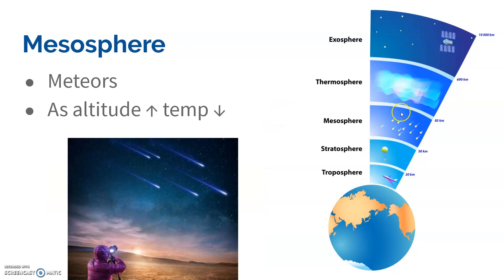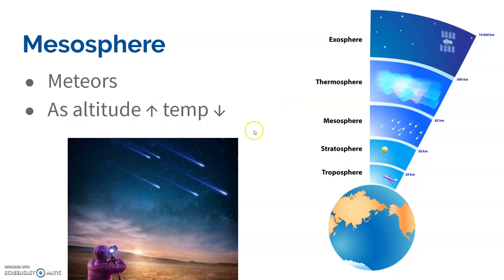Then we go up to the mesosphere. The mesosphere is where meteors are. Now that there's no more ozone, and it's even further away from the surface of the Earth, we go back to seeing the same trend as before — the altitude increases and the temperature begins to decrease.